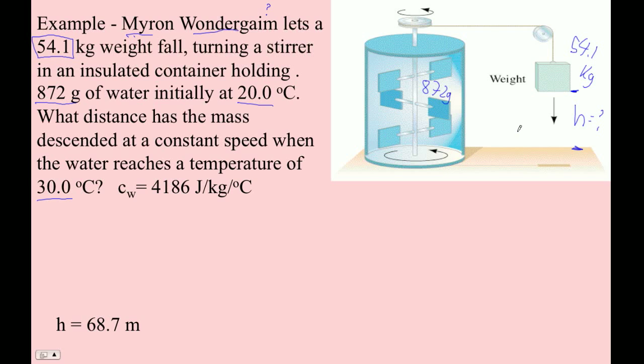What we're going to do here is say that this mgh is going to equal this m c ΔT. This thing is going to heat up, so m c ΔT equals mgh. This mass is 0.872 kilograms, and this c is 4186 joules per kilogram degrees Celsius, that's what this number is there. The change in temperature is 10 degrees Celsius. That equals this mass over here, the 54.1 kilograms times 9.81.